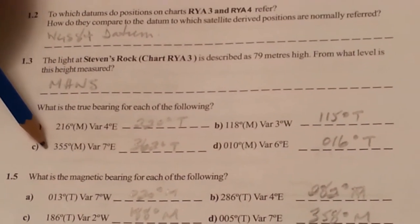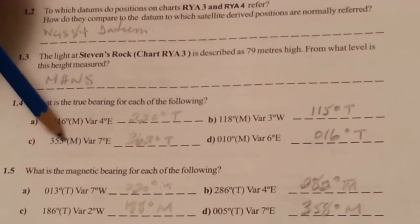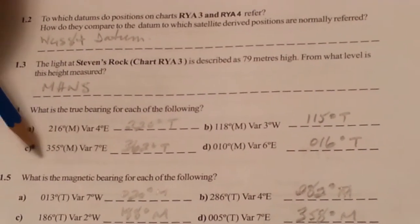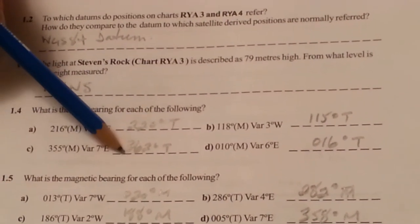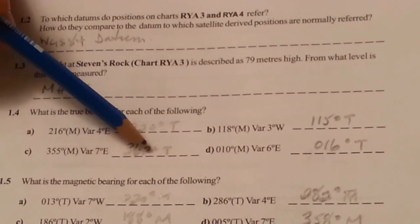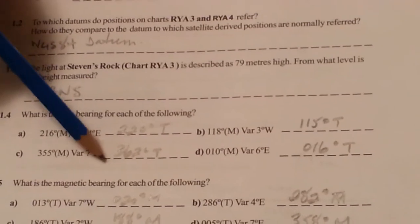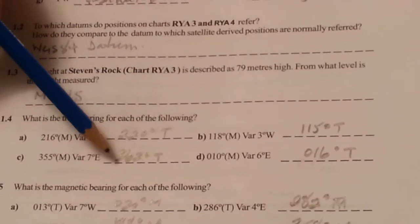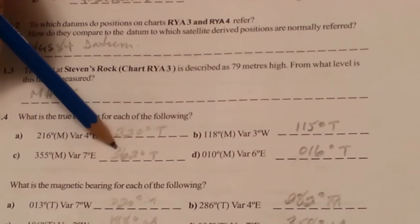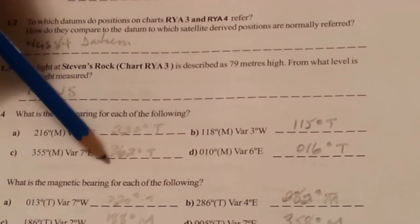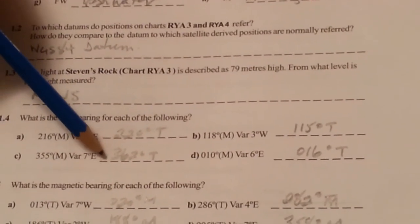So we're going from 355 magnetic to a true bearing, and look what I did. I put 362 degrees true. And you know what, it's easy to do on paper. Of course if I was on a boat I simply wouldn't do this because there are only 360 degrees on a compass anyway, right?